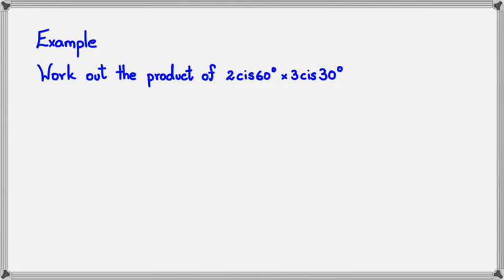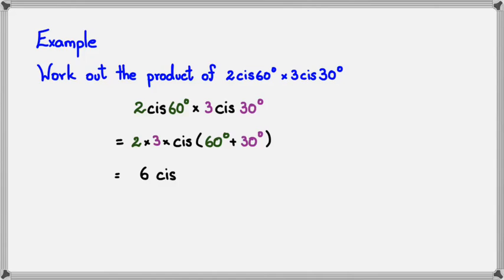The first example here is work out the product of 2 cis 60 times 3 cis 30, which means we have 2 cis 60 multiplied by 3 cis 30. What do we do? We multiply the two modulus, which is 2 times 3, and we add the two arguments. So in this case, it's 60 plus 30. Simplifying this, we would get 6 cis 90. Now this is in polar form.